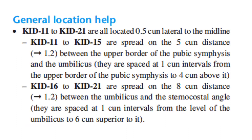Kidney 9 is the Xi Cleft Point of the Yin Wei Mai and the Jiao Hui meeting point with the Yin Wei Mai. Kidney 10 is the He-sea Point, Water point of the kidney, the horary point of the Five Phases, and the local point for the knee. Kidney 11 to Kidney 21 are the Jiao Hui meeting points with the Yin Qiao Mai, all located 0.5 cun lateral to the midline. Kidney 11 to Kidney 15 are spread on the 5 cun distance between the upper border of the pubic symphysis and the umbilicus, spaced at 1 cun intervals. Kidney 16 to Kidney 21 are spread on the 8 cun distance between the umbilicus and the sternocostal angle, spaced at 1 cun intervals.